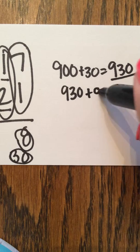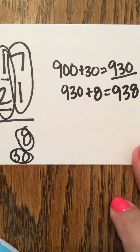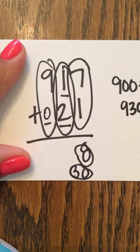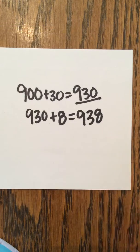930 plus 8 equals 938. So 917 plus 21 gives me 938.